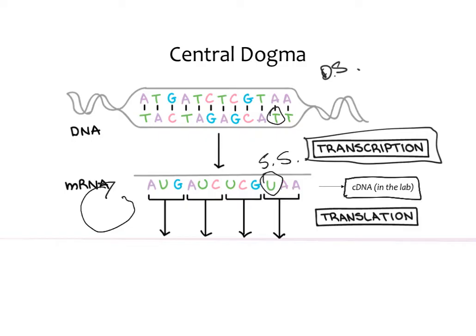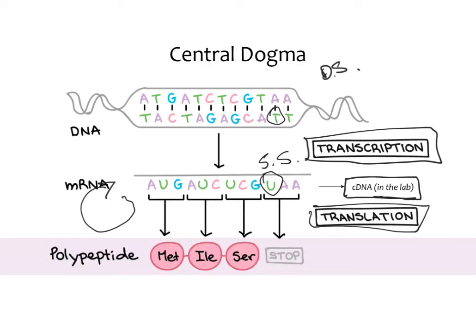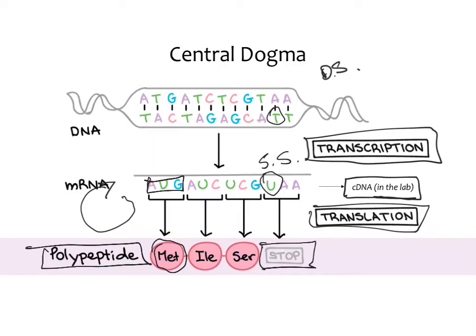Assuming it doesn't get degraded and doesn't become cDNA, the next step for mRNA is translation. This is where the single strand of mRNA is translated into our protein sample. Our protein starts as a chain of polypeptides — every three mRNA bases get converted to one amino acid. Methionine is typically the starting amino acid, and then a stop codon — UAA, UAG, and a few others — tells the polypeptide chain to stop growing.